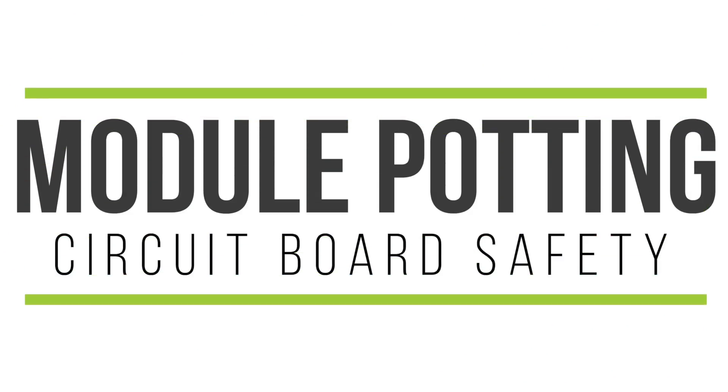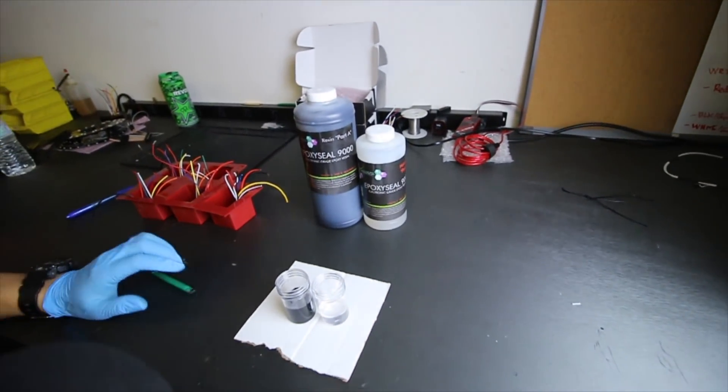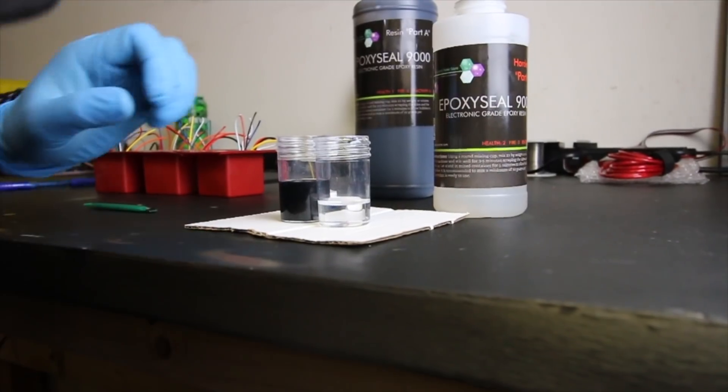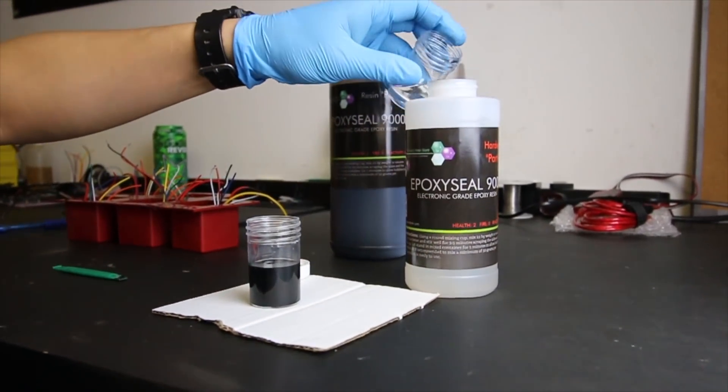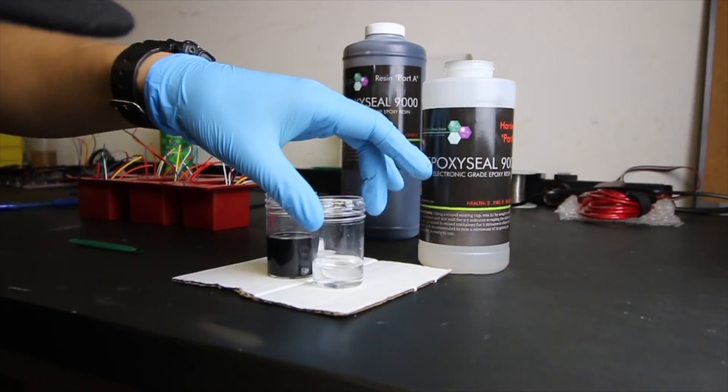Alright, the moment you've been waiting for, module potting. This is super kind of, I don't know, it's pretty boring. So I'm just going to add this in there. We're going to mix up half parts clear to one part black. We're going to make this weird little mixture, stir it up, let it set up.